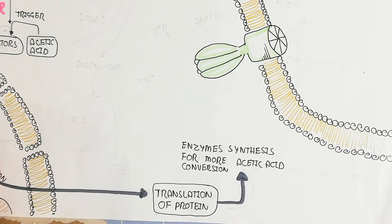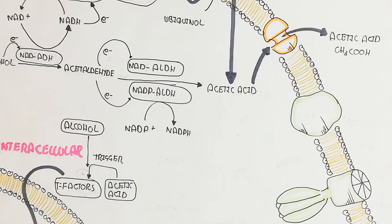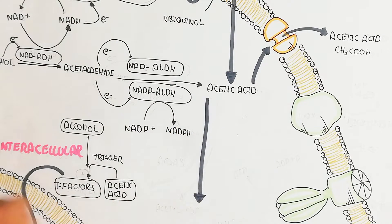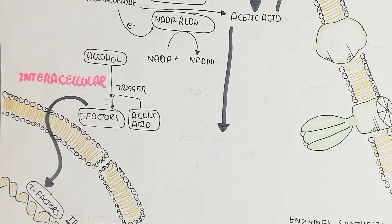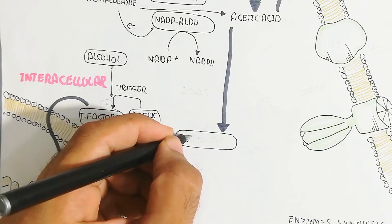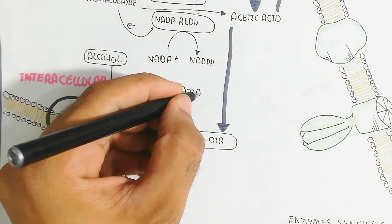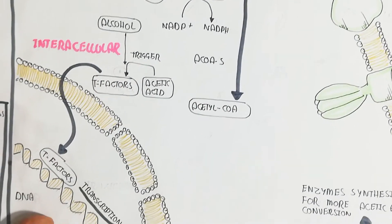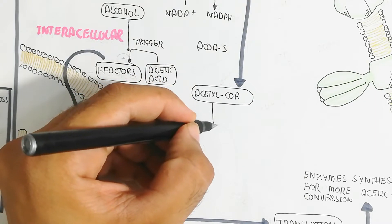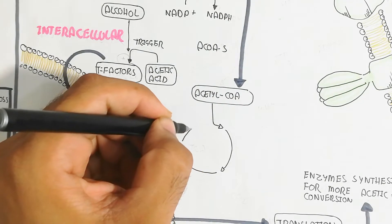On the other hand, NADH dehydrogenase enzyme is also protein-based. Acetic acid can further react with acetyl-CoA synthase to produce acetyl-CoA, a two-carbon compound that enters the tricarboxylic acid (TCA) cycle, producing carbon dioxide and energy.